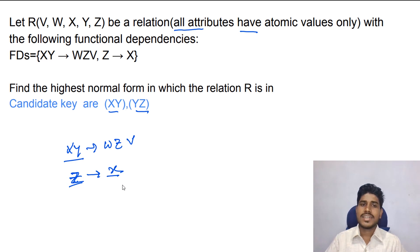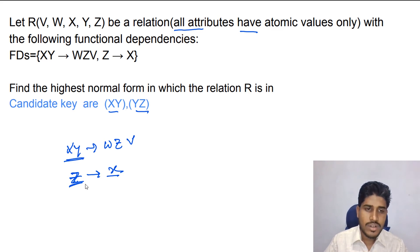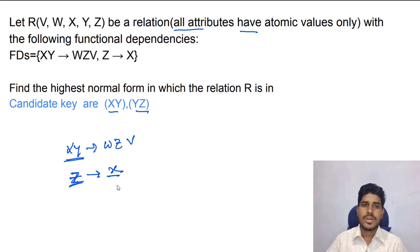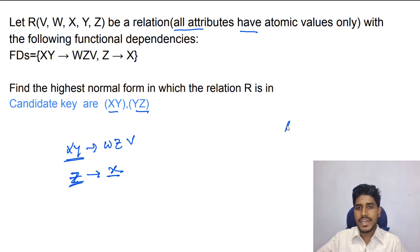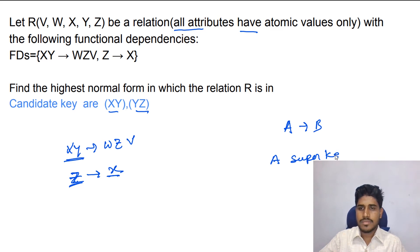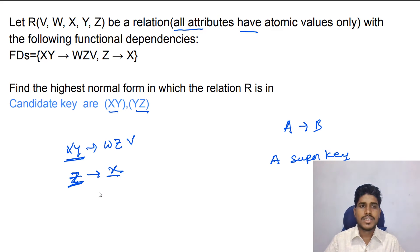Now we have to check whether this relation is in third normal form. X, Y is a super key. Z is not a super key, but X is a prime attribute. So this relation is in third normal form. Now we check BCNF — BCNF states that for every A determines B, A must be a super key. X, Y is a super key, but Z is not a super key. So this relation is not in BCNF. This relation is in third normal form.